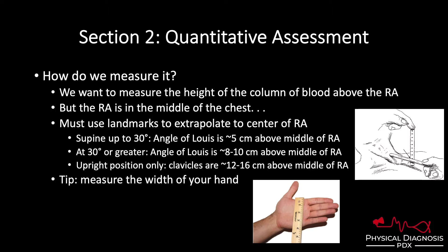Now that we know what we are measuring and why we're measuring it, we're ready to talk about how we measure it. What we want to do is measure the column of blood sitting above the right atrium — that's the manometer — and that'll tell us in centimeters of water the pressure of the right atrium. The problem is we can't see the right atrium because it sits in the middle of the chest, so we have to use landmarks that we can see to extrapolate to the right atrium.